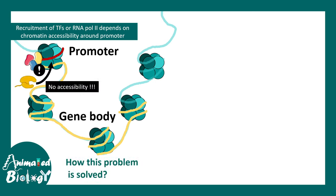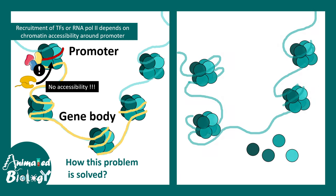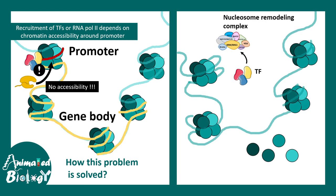How is this accessibility problem solved? In many cases, transcription factors interact with complexes known as nucleosome remodeling complexes, which act on the DNA and the histones to modify the interactions between them. The nucleosome remodeling complex modifies the chromatin such that there is now accessibility and the transcription factor can bind.